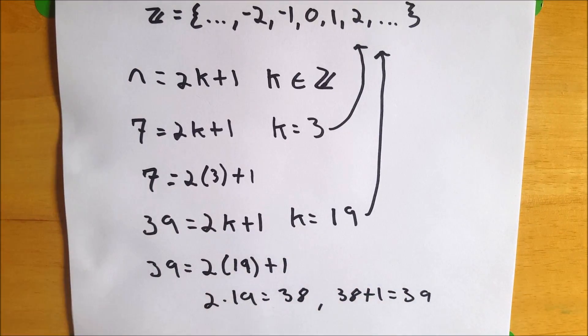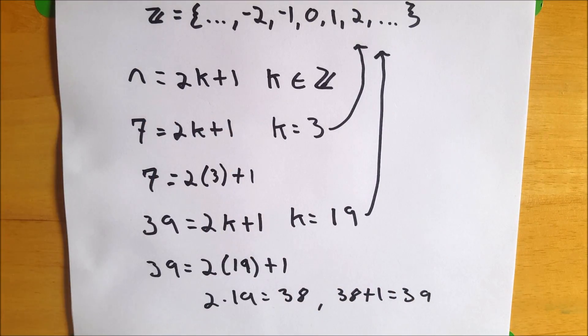So you see how we can use this definition to prove that a number is indeed odd. So if you can show that a number is equal to 2k plus 1 for some k of the integers, then you have proven that that number is odd.